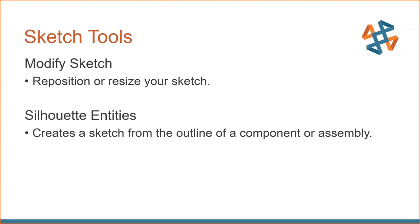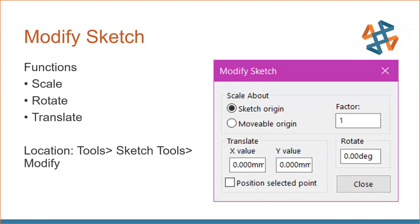Let's dive into Modify Sketch. This tool has been in SOLIDWORKS for a long, long time — it's not new. Instead of a property window on the left-hand side, you get a dialog box that pops up — that's how old this tool is. The functions include: Scale About, where you can use your sketch origin or your movable origin and scale around that; Translate, which lets you reposition the sketch; and Rotate, where you can rotate about a certain point or about the sketch's center.